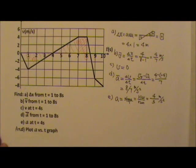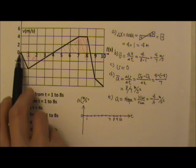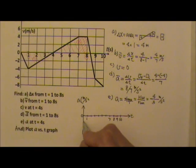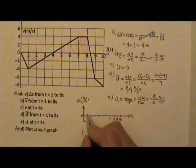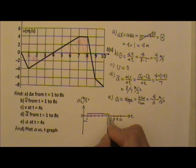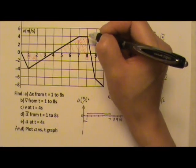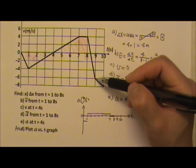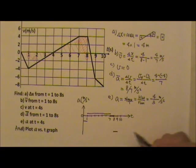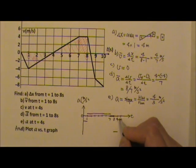Now let's plot the acceleration versus time graph. The acceleration is the slope of the velocity graph. From 0 to 1, the slope is negative, so negative acceleration. From 1 to 7, the slope is positive and less steep, so the magnitude is smaller and positive. From 7 to 8, the slope is zero, so acceleration is zero. From 8 to 9, the slope is negative and very steep, so the magnitude is large and negative. Then it's not as steep after that. That's the acceleration versus time graph.